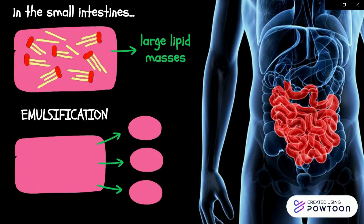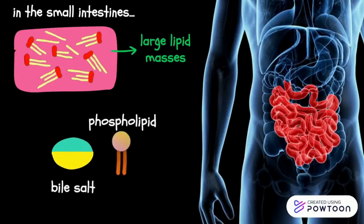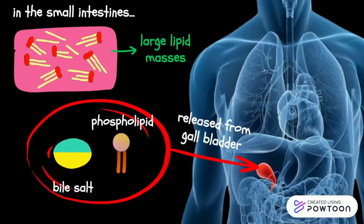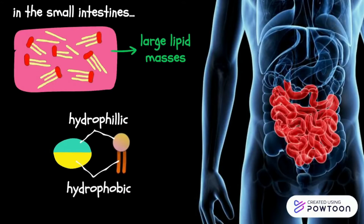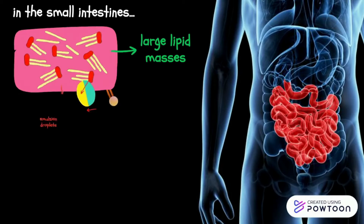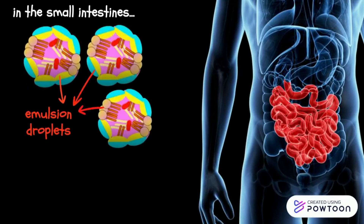Fats can only travel through the watery environment of the body by the process of emulsion. This can be done with the help of bile salts and phospholipids, which are released from the gallbladder. Bile salts and phospholipids have both a hydrophilic and hydrophobic region. The hydrophobic region of the bile salts and phospholipids will attach themselves to the hydrophobic large fat molecule to form emulsion droplets.